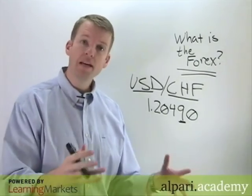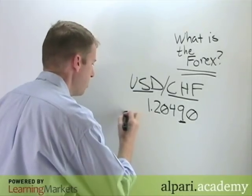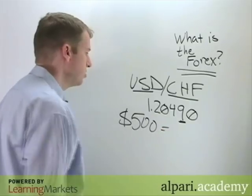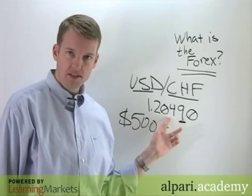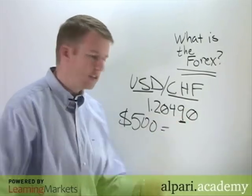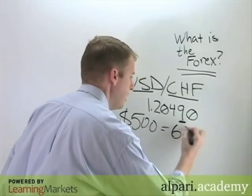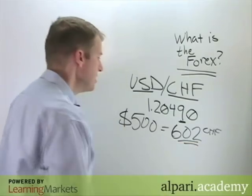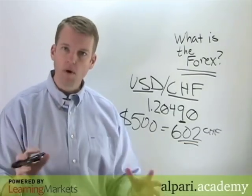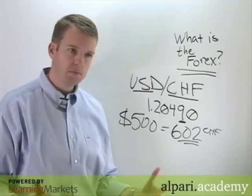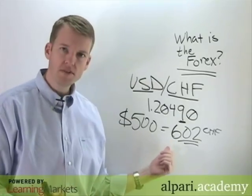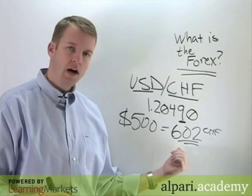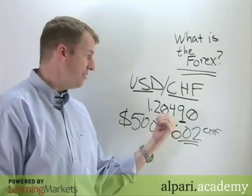If we were to convert some spending money — let's say $500 worth of spending money into francs at this particular exchange rate — that's going to give us 602 francs. So now we've done our first foreign exchange transaction. If you've ever traveled abroad, this is what you've done: you've turned your domestic currency into another currency at the exchange rate.